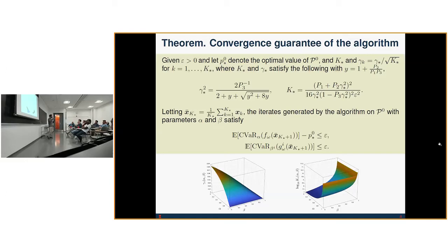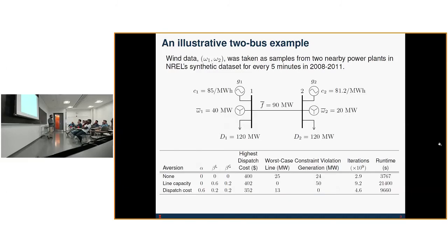But now that we've seen this formulation, let's consider a simple example. A simple two-bus example where each bus is equipped with some generation, dispatchable generation, some wind generation, and some demand, and they're connected by a single line. Now solving the problem we had from before,